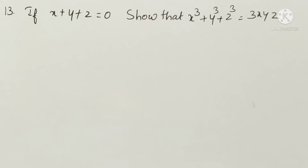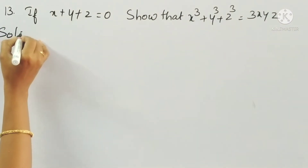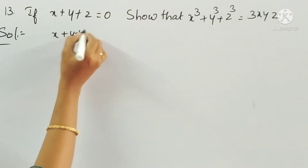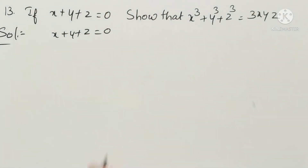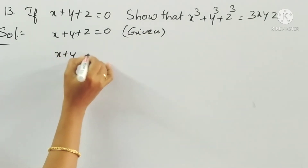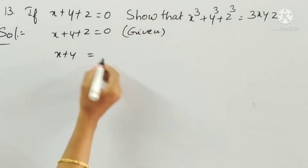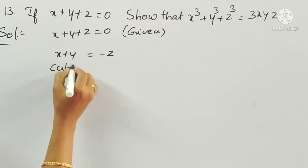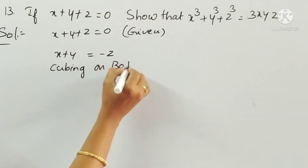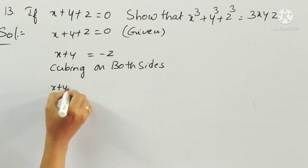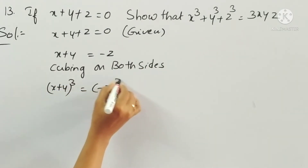This problem we can solve in two ways. First method: x plus y plus z is equal to 0 is given. If we transpose z to the right-hand side, we get x plus y is equal to minus z. Now cubing on both sides, x plus y whole cube is equal to minus z whole cube.